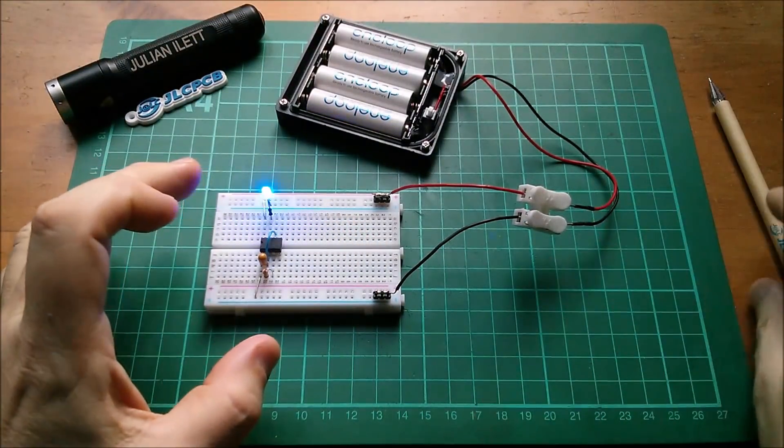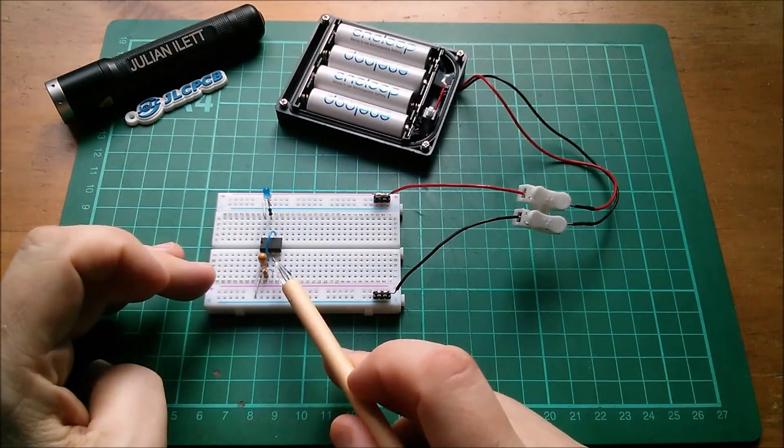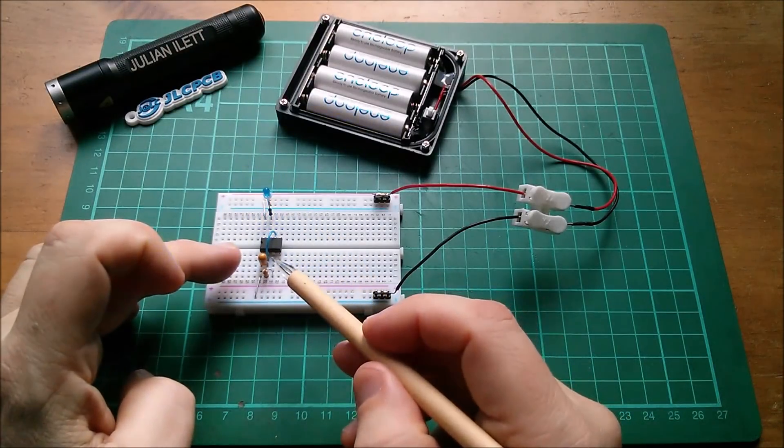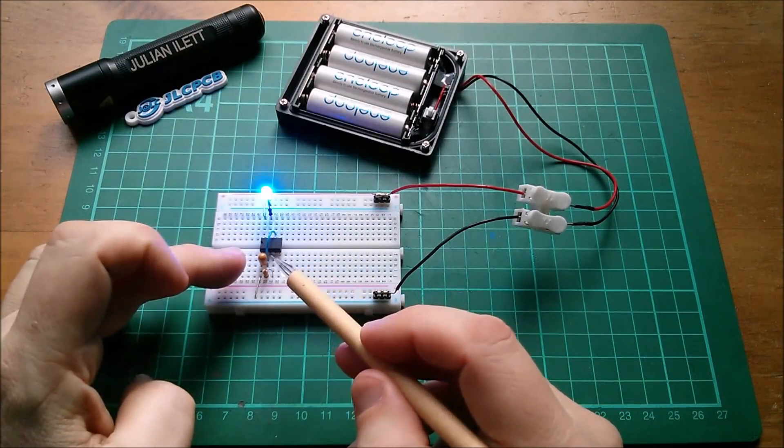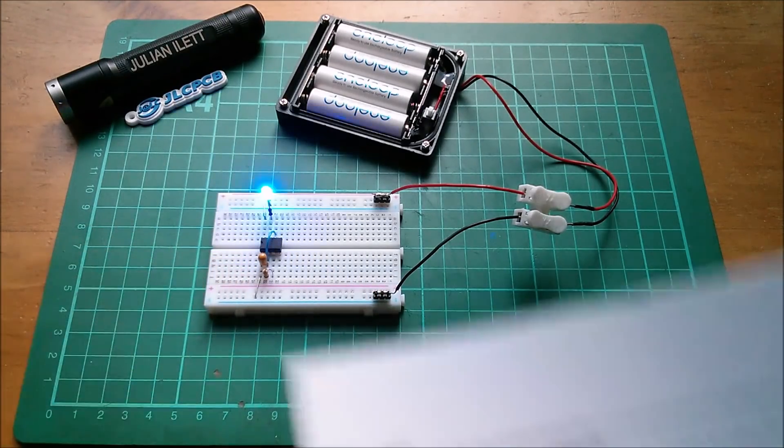And the nice thing about this arrangement is that it's symmetrical. We've got the output transistors pulling up and then down through the same resistor charging and discharging the capacitor, which you don't have in the conventional astable circuit.